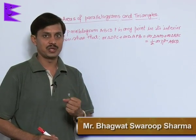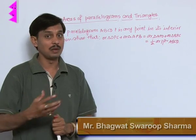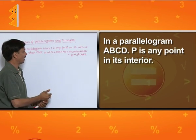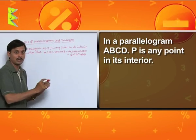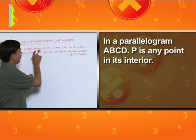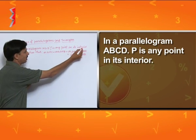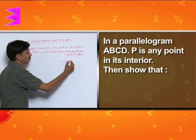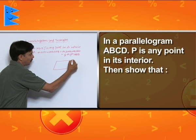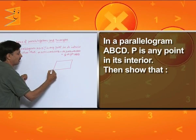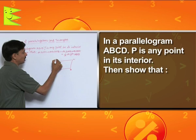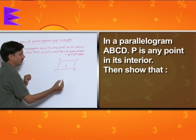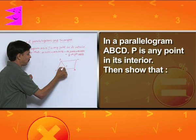Now one problem based on these conclusions of the same base and between same parallel lines. In a parallelogram ABCD, P is any point — not necessarily the intersection of diagonals or any fixed point. P is any point in its interior. After joining P to all four vertices, four triangles are formed.